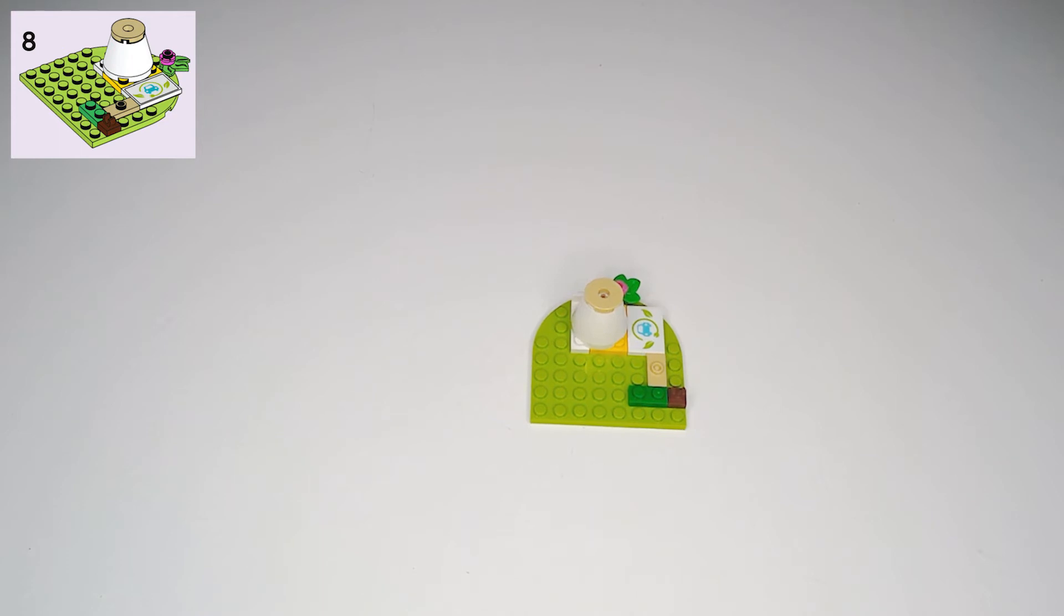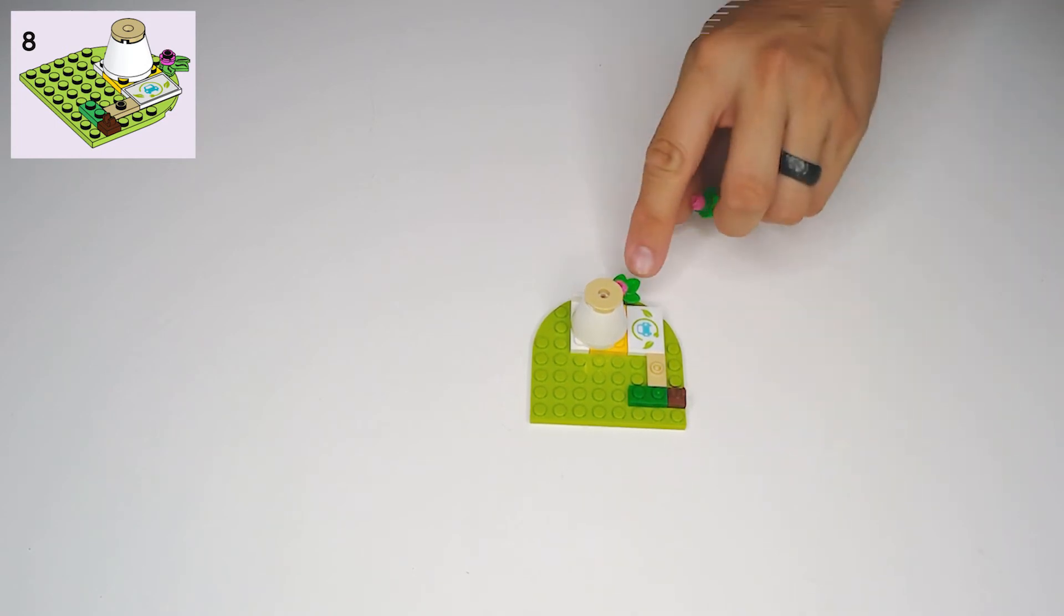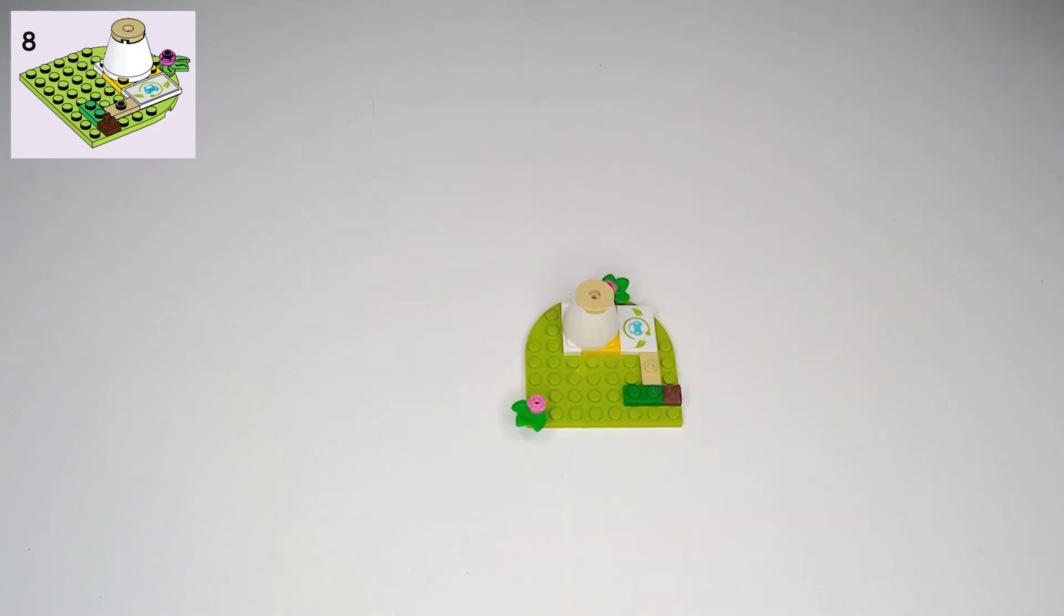Step nine is going to get another little flower, so grab one of these three leaf pieces, and put another dark green bead on the bottom, and another one of these green flowers on top, and then this is going to go on kind of the opposite corner from where the other flower is, like that.